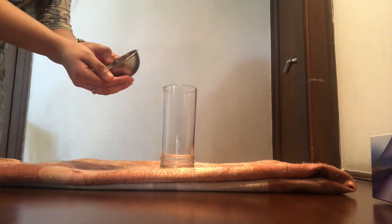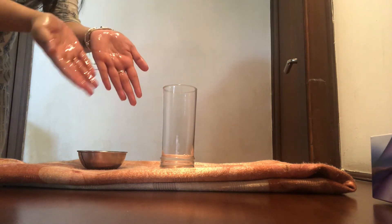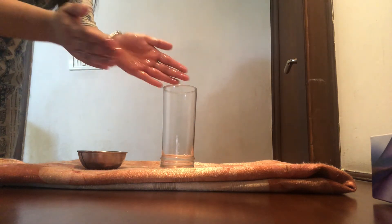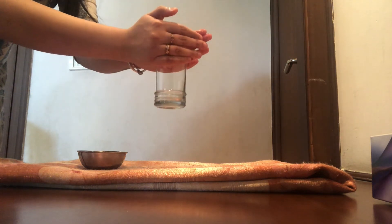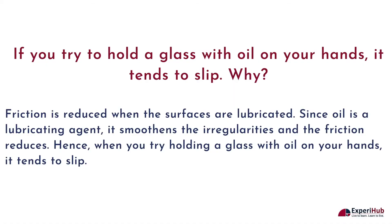But what happens when I put oil on the surface of my hands? When I apply oil on my hands, the glass slips right through. Friction is reduced when the surfaces are lubricated. Since oil is a lubricating agent, it smoothens the irregularities and the friction reduces. Hence, when you try holding a glass with oil on your hands, it tends to slip.